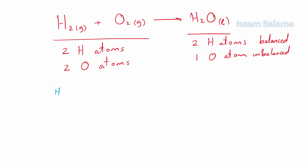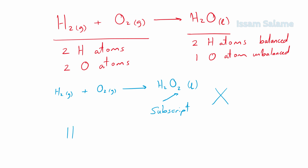How do we balance the number of oxygen atoms on both sides? You might think we can simply change the subscript — that little number at the lower right corner of the atom — but this is not possible. If we change the subscript, we change the whole substance; H₂O₂ is peroxide, not water. So we cannot balance atoms by changing subscripts.